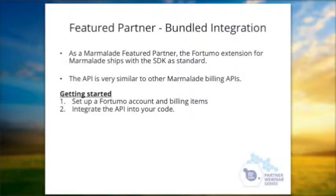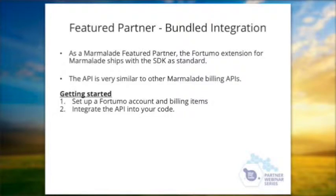You basically just have to add the library in, set up your app secrets and IDs, call buy, and then respond to the payment. Things you need to do to get started: set up a Fortumo account, set up some billing items — called services in Fortumo — and then integrate the API into your code. If you've already got billing logic in there for other platforms, it's pretty easy to switch Fortumo into that.